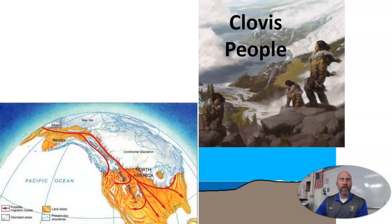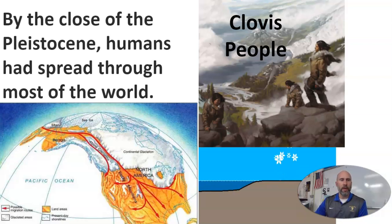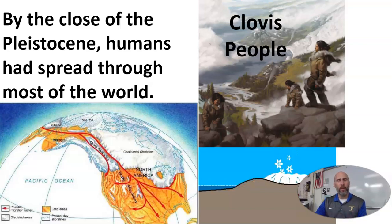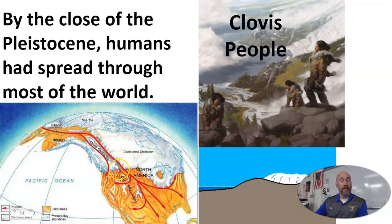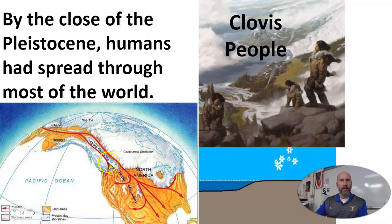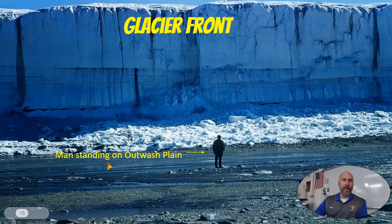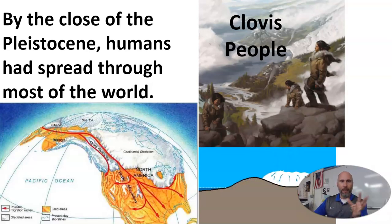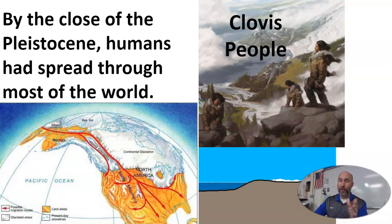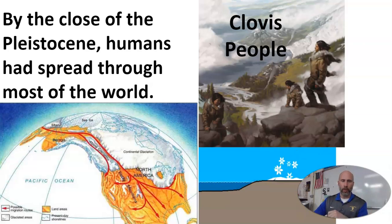One of the things that happened during this time was the arrival of people in North America. By the end of the Pleistocene, humans had spread all over the Earth. Prior to this, we weren't really in North America, but the fact that the glaciers were melting opened up a land bridge between Asia and North America, and that allowed Homo sapiens to cross over that boundary. The timing is about 12,000 years ago, though we think it might have been even before that — it's an area of active research.